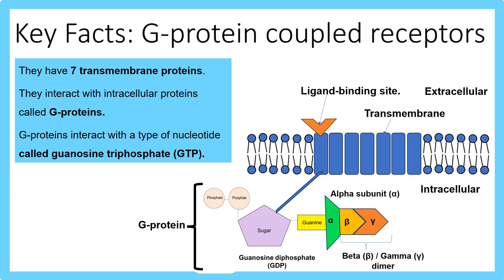Let's progress to the third type of receptor: the G-protein coupled receptor (GPCR). Instead of having one transmembrane segment, they have seven, varying in structure compared to enzyme-coupled receptors. They interact with intracellular proteins called G proteins — intracellular meaning inside the cell. These G proteins interact with a type of nucleotide called guanosine triphosphate (GTP), which is involved in producing energy.